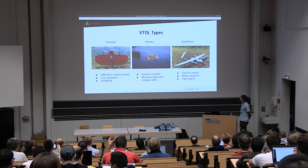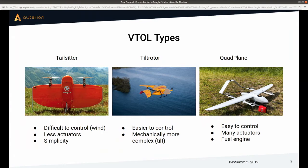The third type is the quad plane, also known as standard VTOL. It's basically a brute force approach: you have a plane and you add multi-copter motors to it, giving you essentially two different systems. From my point of view it's definitely the easiest thing to control, and many companies use it for that reason. It has many actuators, which can be a pro and a con — it's more weight, but it also gives you redundancy, and it's tempting to put a fuel engine in there and still have your separate quad motors.